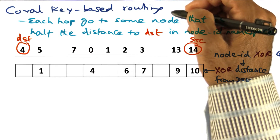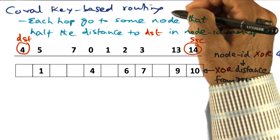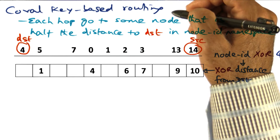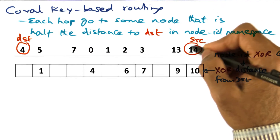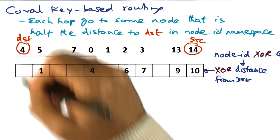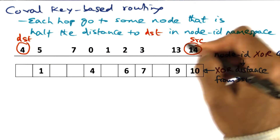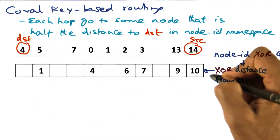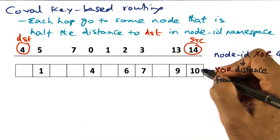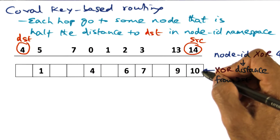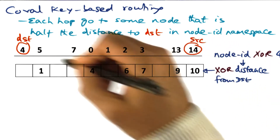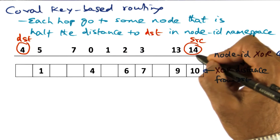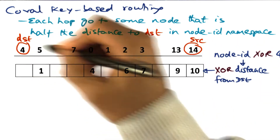The distance between two nodes in the node namespace is given by the XOR of the node IDs. If I look at source 14 here and destination 4 here, we can compute the XOR distance between the source and the desired destination. The XOR distance from my source, which is 14, to the destination, which is 4, is 10.